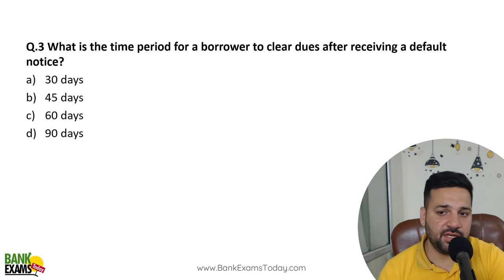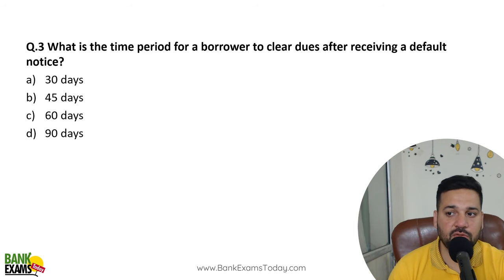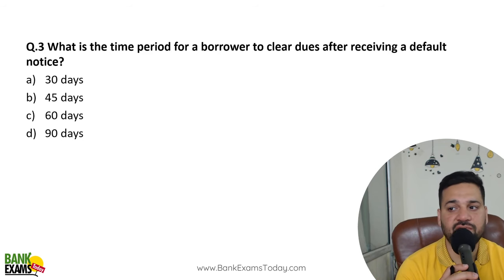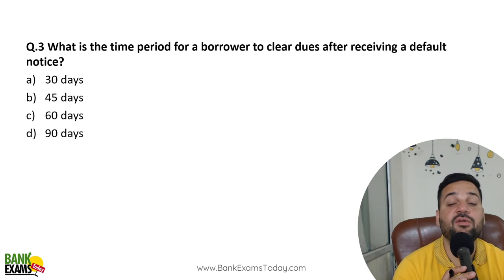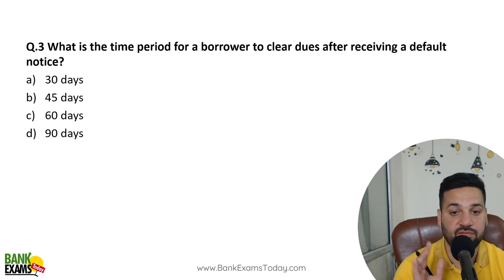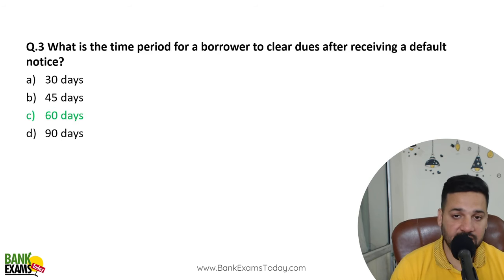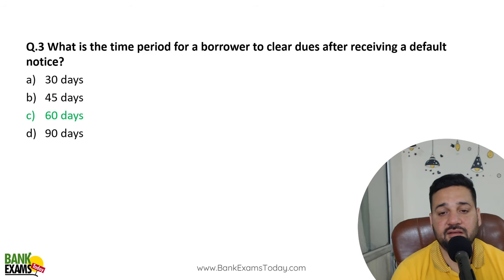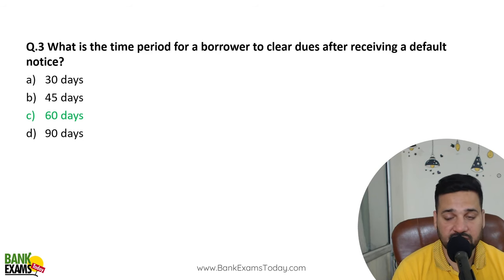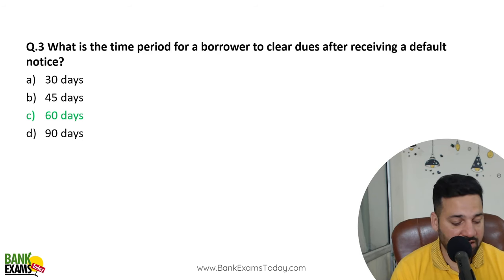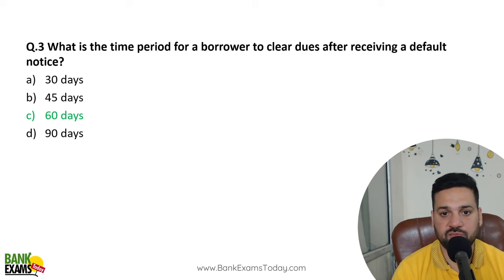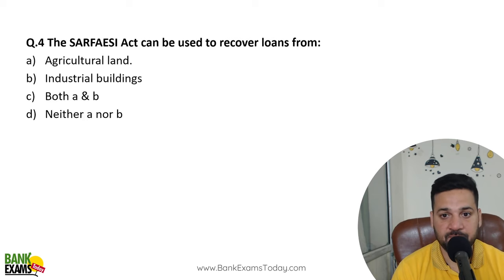What is the time period for a borrower to clear dues after receiving a default notice from the bank or lender? Within 60 days — the borrower has to pay. 60 days' time is given after receiving the notice.